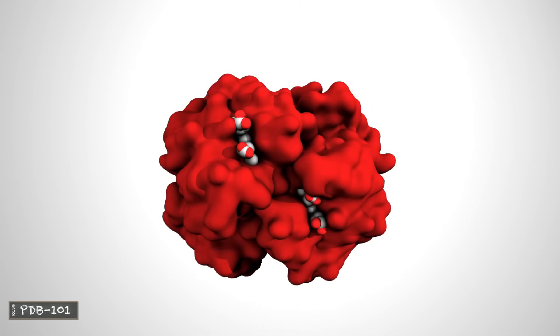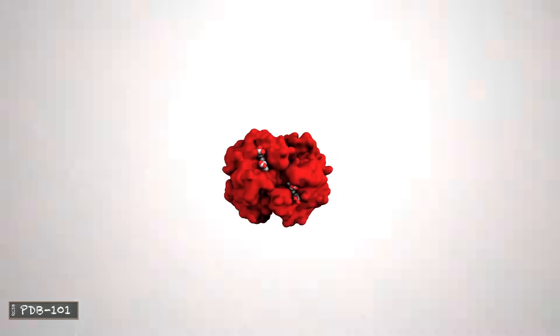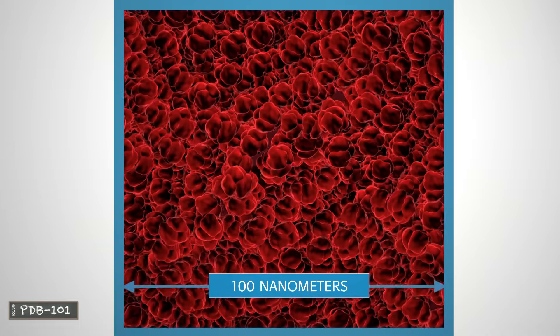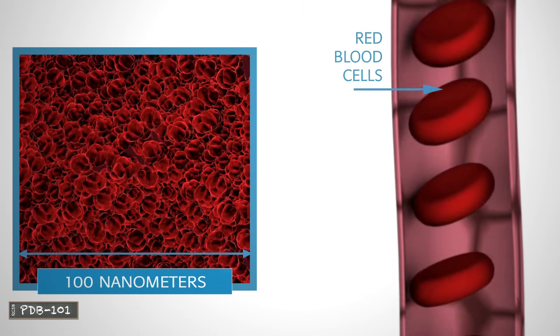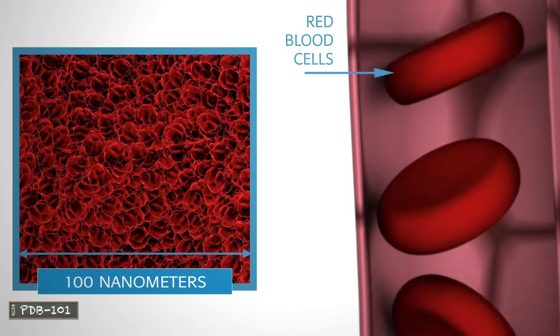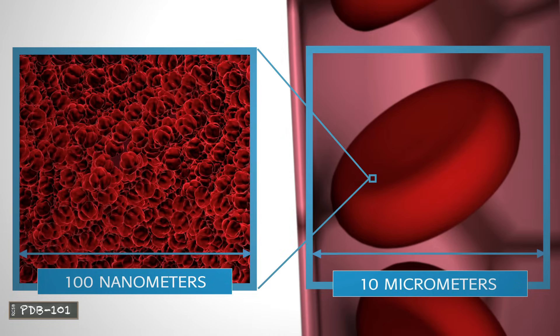Most proteins are smaller than the wavelength of light. For example, the hemoglobin molecule is about 6.5 nanometers in size. Hemoglobin is found in high concentration in red blood cells. A typical red blood cell contains about 280 million hemoglobin molecules.